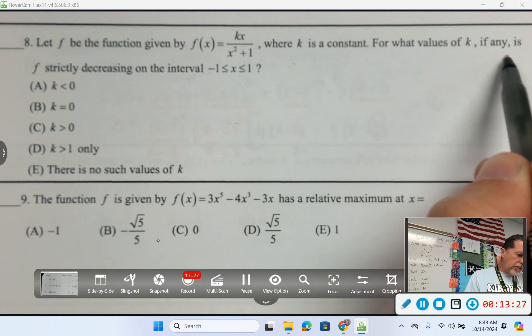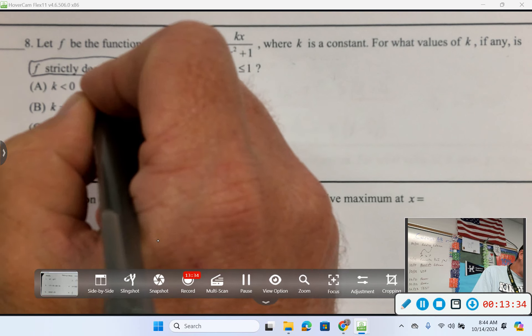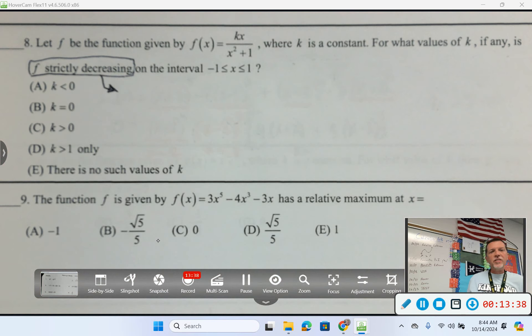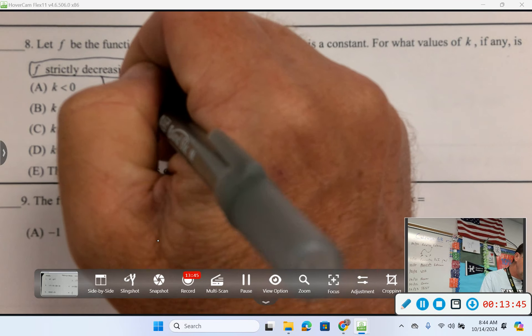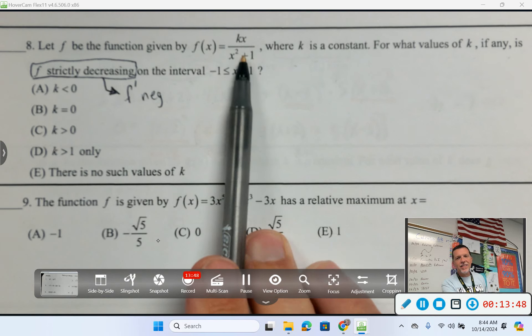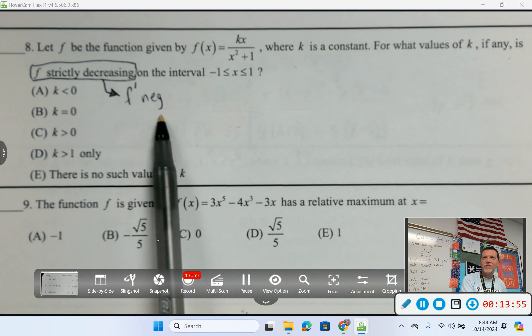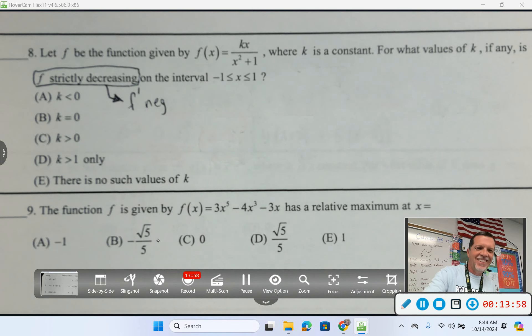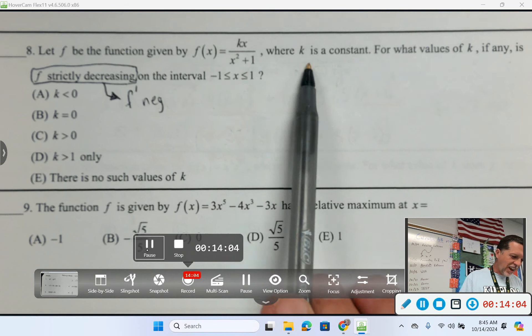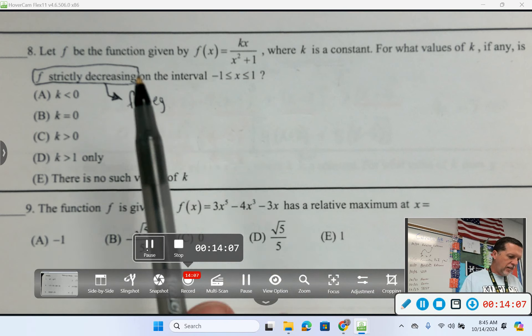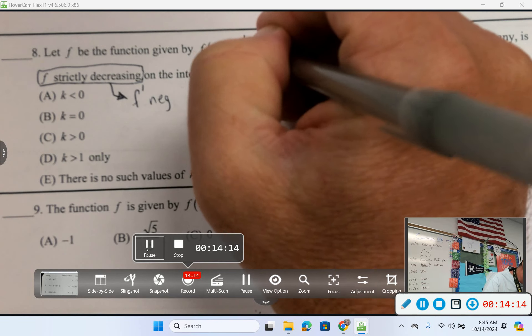For what values of k is f strictly decreasing? Okay, if f is decreasing, what does that mean? Especially when we're thinking derivatives. F prime is negative. So, I can't really tell looking at that original if we're increasing or decreasing. Hopefully, I can take a derivative and figure out where the derivative is negative. Number 8, on worksheet 2, wherever that might be. Let f be this function. k is constant. Okay, so we're going to take a derivative, figure out what value of k would make that derivative negative. Top, bottom.